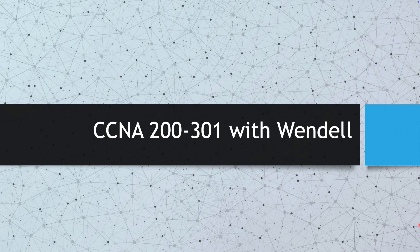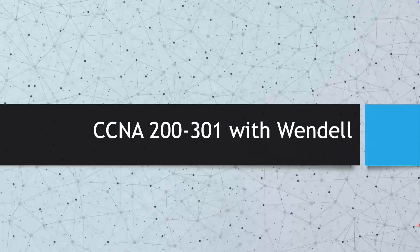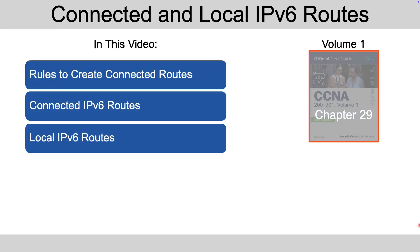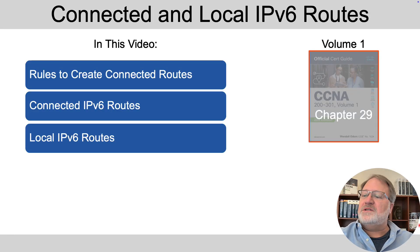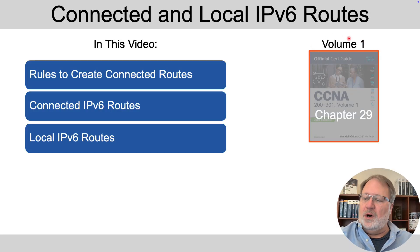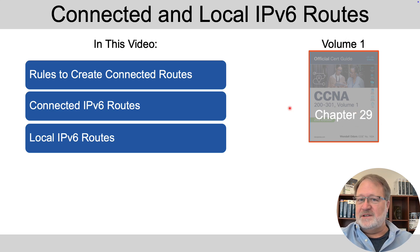IPv6 routers need to learn all the IPv6 routes in a network, and that starts with connected routes. How does that work? This video gives all the details with plenty of CLI output. The content in this video mirrors some content you'll find in the Official CERT Guides Volume 1, Chapter 29 in the first section.